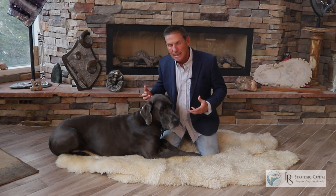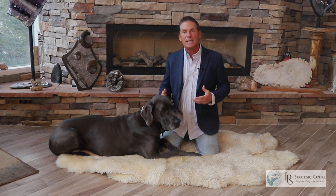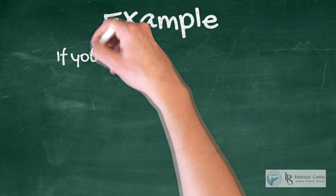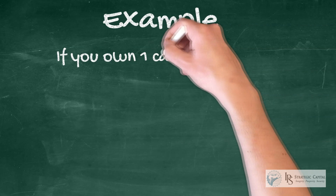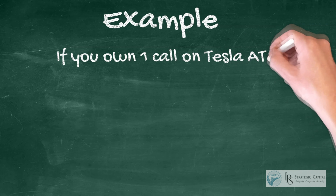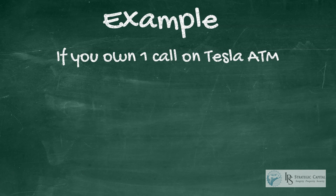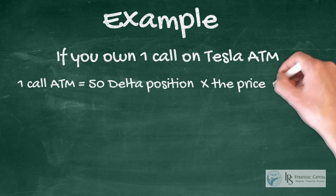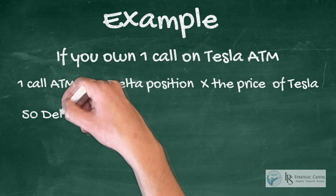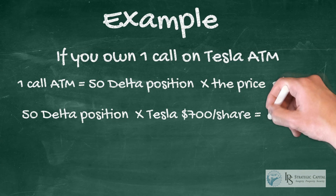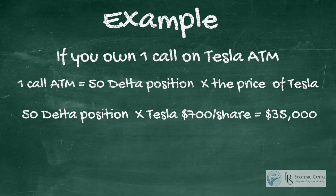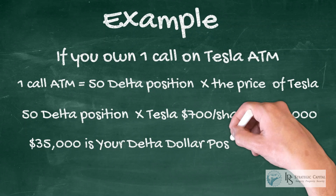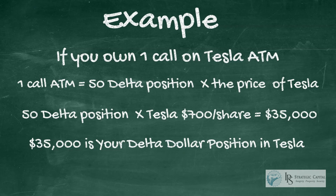The first thing we must understand is that Delta represents equivalent share position. For example, if you own one call on Tesla at the money, you own 50 shares of Tesla times the price of Tesla. If Tesla's trading at $700 a share, you own $35,000 Delta dollars. That's your Delta dollar position on Tesla.